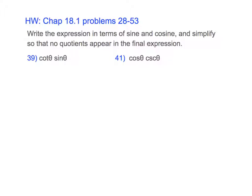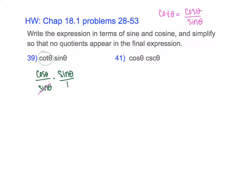So I can change cotangent to cosine theta over sine, and this is being multiplied by sine theta. I noticed this one's a fraction and this one's not — I can put the sine over 1. If I multiply, the sines are diagonal from each other so they cancel. Multiplying straight across gives cosine on top and 1 in the bottom. Cosine over 1 is just cosine, and I can't simplify further. So it simplifies to just cosine theta.